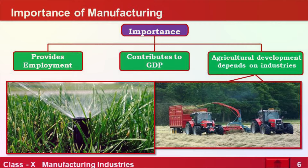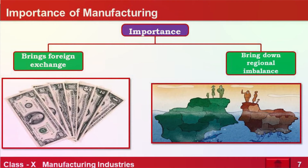Manufacturing industries not only help in modernizing agriculture, which forms the backbone of our economy, they also reduce heavy dependence on agriculture. First, employment generation; second, providing valuable goods and income to the country. Industrial development is a precondition for eradication of unemployment and poverty. If you are manufacturing something, you sell in the internal market as well as the international market. Selling internationally is called export, which brings foreign exchange income to the country.